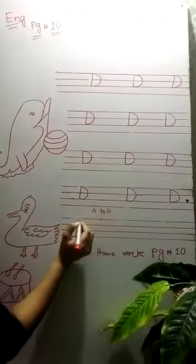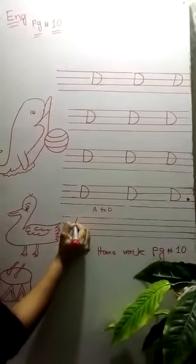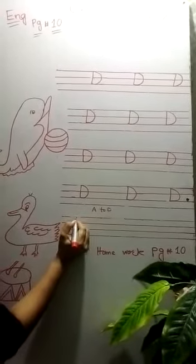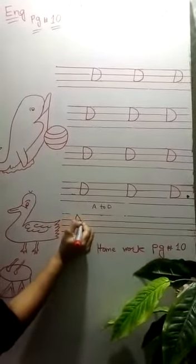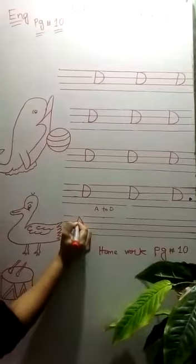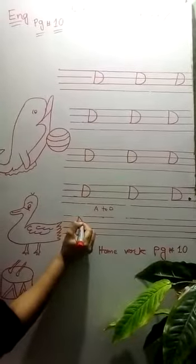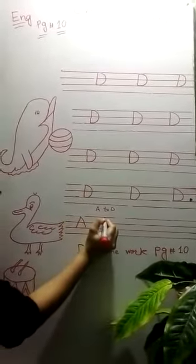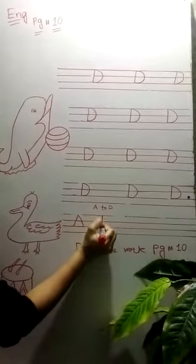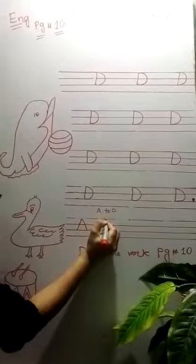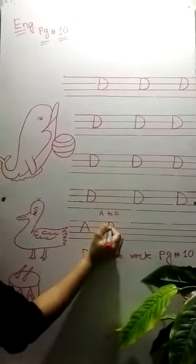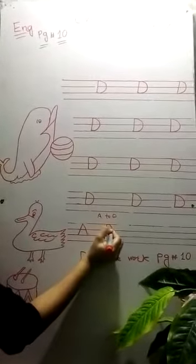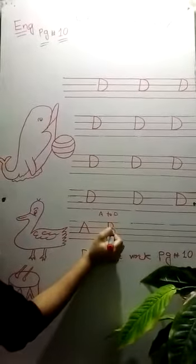Now we will learn A to D. A for Apple. Draw a standing line, then another standing line, and go stepping line. A for Apple. Draw a standing line, draw a curve, and a second curve.